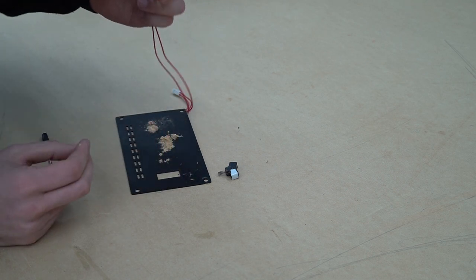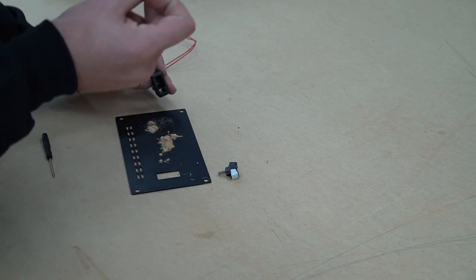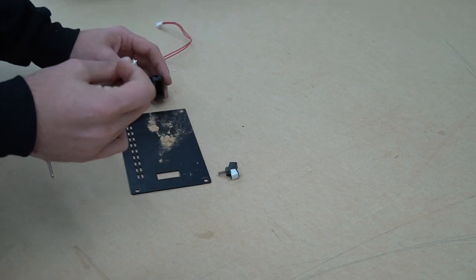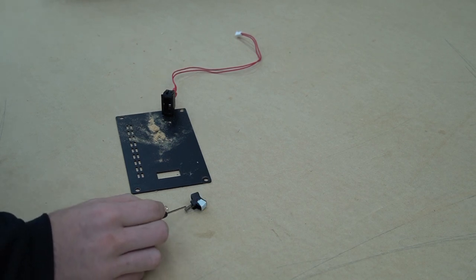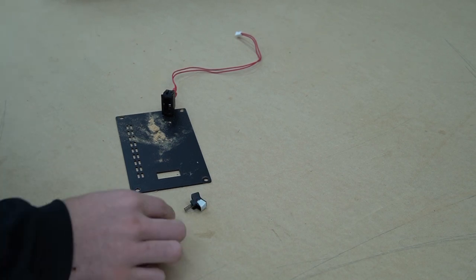While we have it disassembled, we're going to blow everything off with compressed air and then place the switch back together. Here we want to make sure that we do not lose the spring on the back side of the rocker switch.